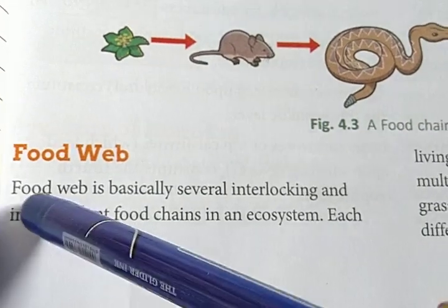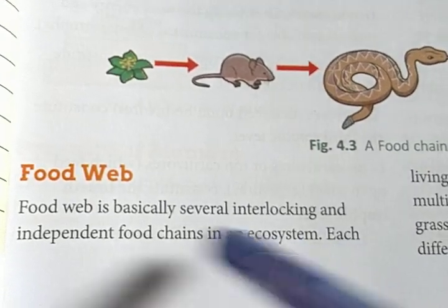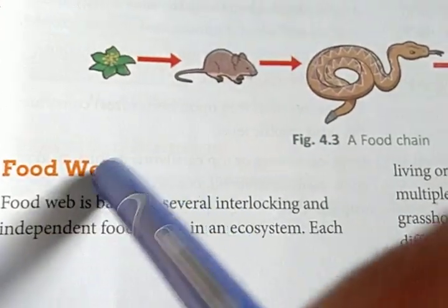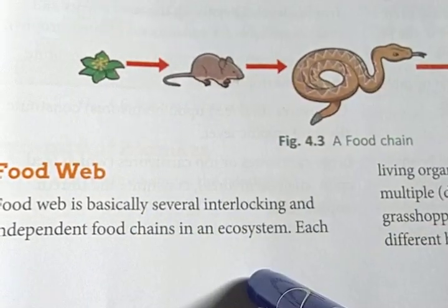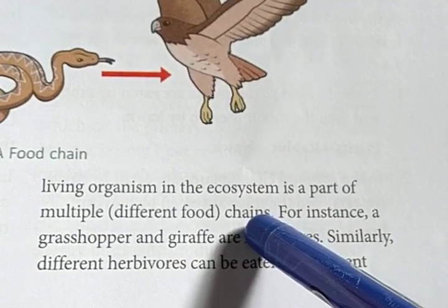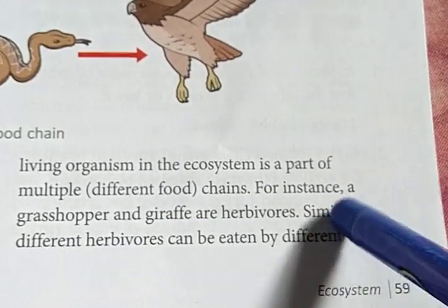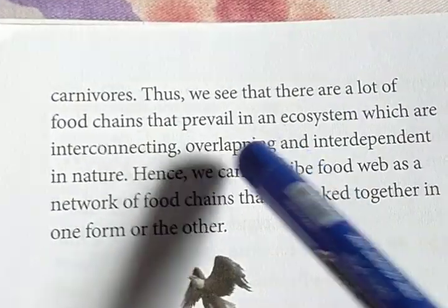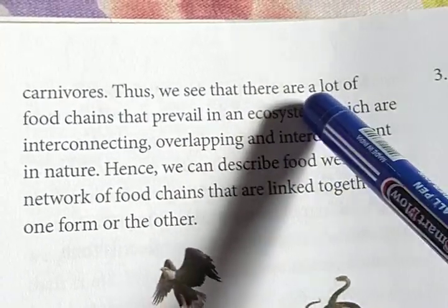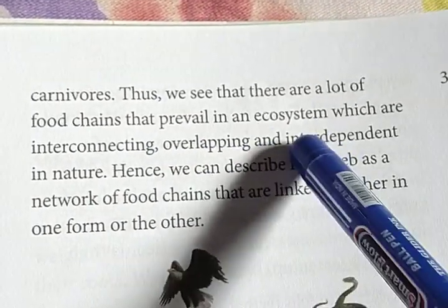Next is the food web. A food web is basically several interlocking and interdependent food chains in an ecosystem. The term 'web' means network — it is a collection of lots of food chains. Each organism in the ecosystem is a part of multiple chains. For instance, a grasshopper and a giraffe are both herbivores. Similarly, different herbivores can be eaten up by different carnivores. Thus there are a lot of food chains in an ecosystem which are interconnecting, overlapping, and interdependent in nature.